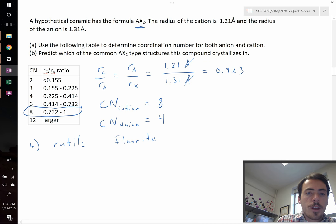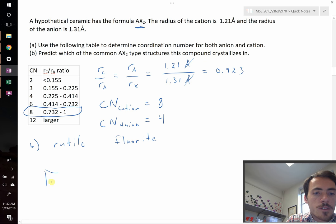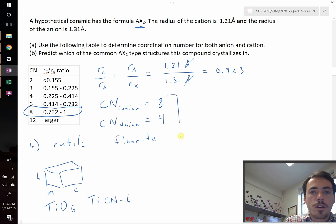Now you remember rutile, this is a tetragonal crystal structure, so it's a little bit longer in one dimension than the others. You've got your a and your b are equal to each other, but that's not equal to c. And in this crystal structure, you have TiO₆ octahedra. So the titanium, since that's an octahedra, its coordination number is equal to 6. Now neither of our two coordination numbers is 6, so that alone is enough to rule rutile out.